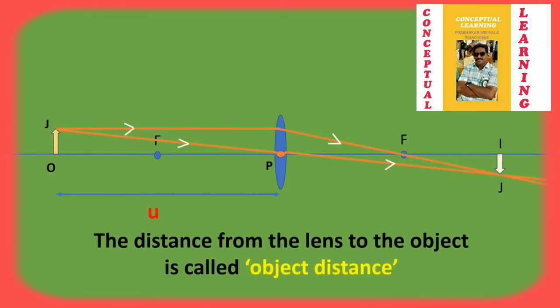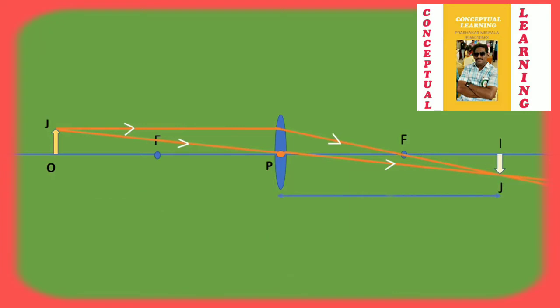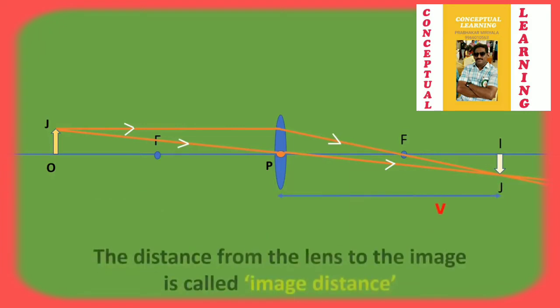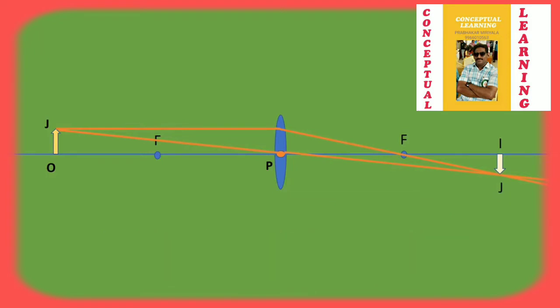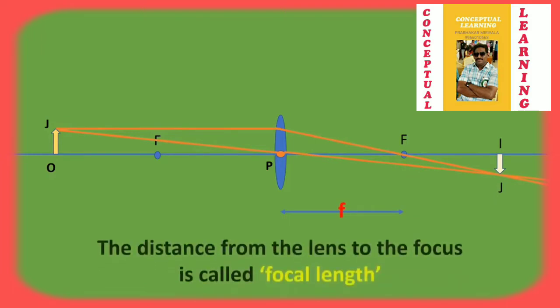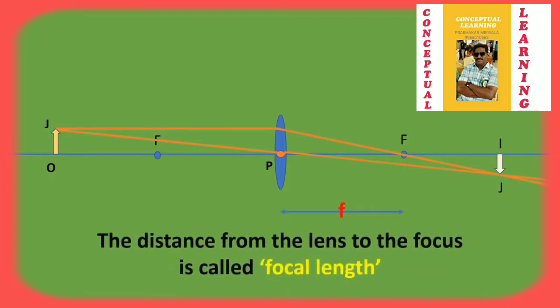The distance between the optic centre and the object is termed as object distance. The distance between the lens and the image is called image distance, represented as V. The distance between the optic centre and the principal focus is called the focal length.